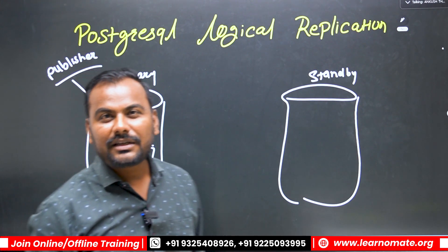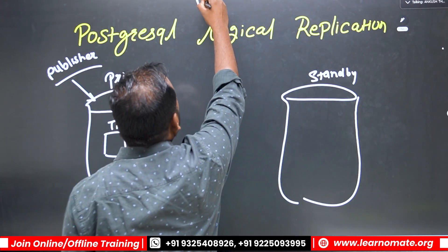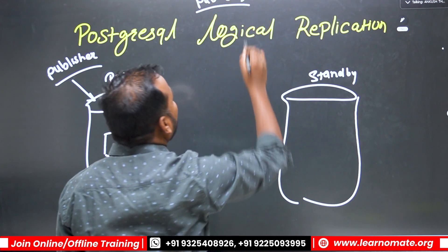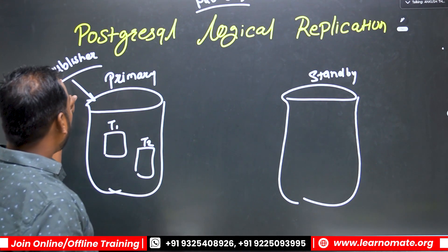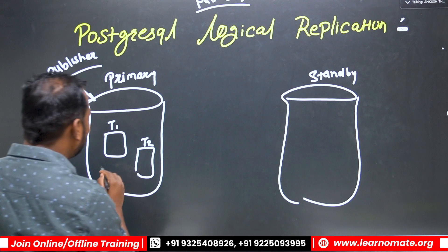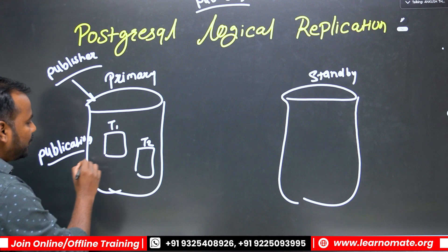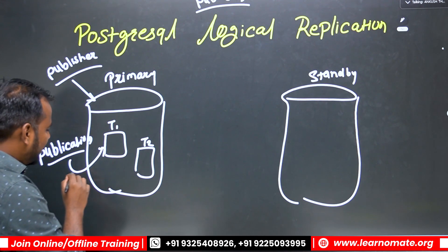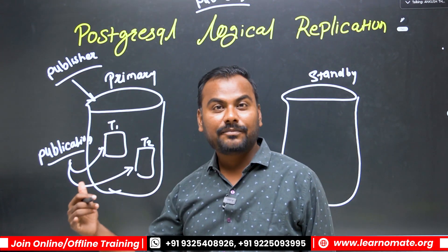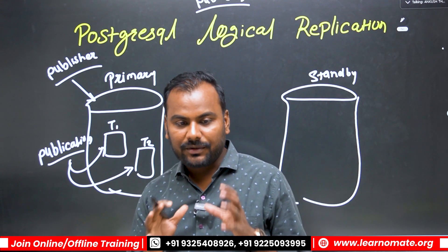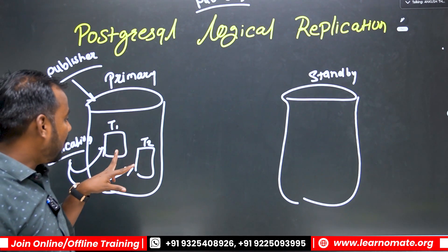Logical replication is based on the pub/sub concept — publication and subscriber. This is my primary server, which we call the publisher node, on which we are going to create a publication. We create a publication on the master or primary side for these two tables.